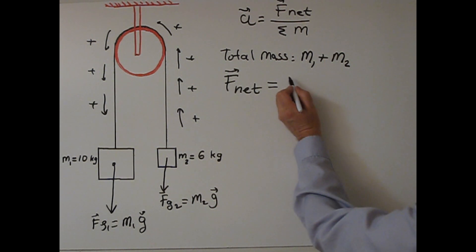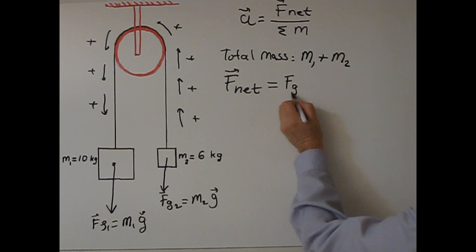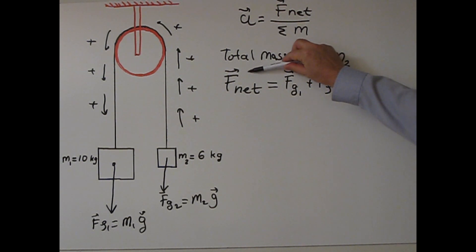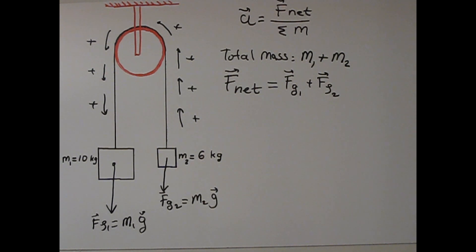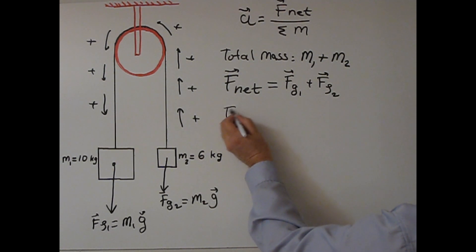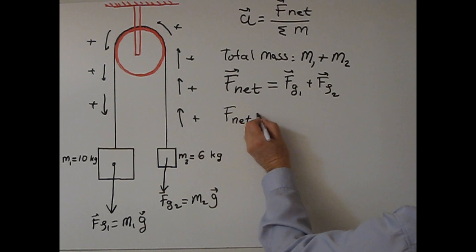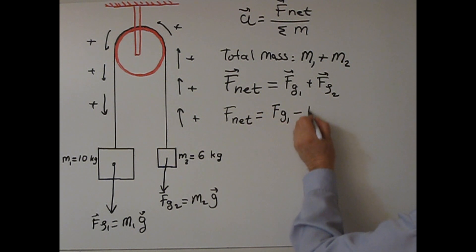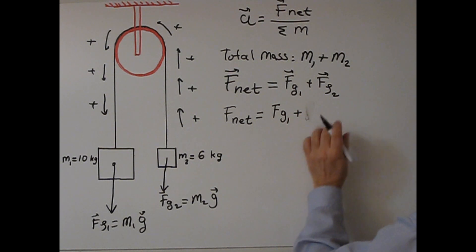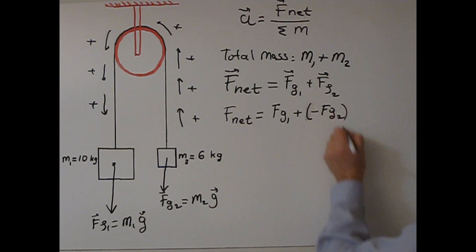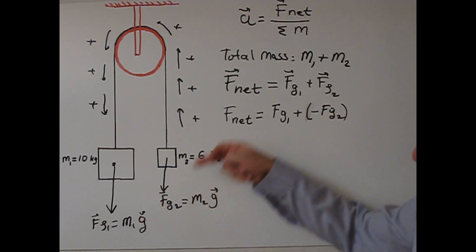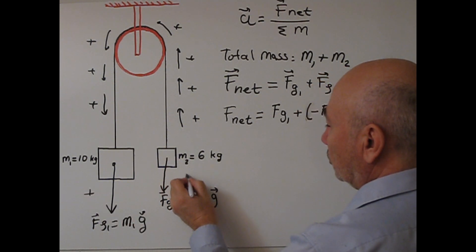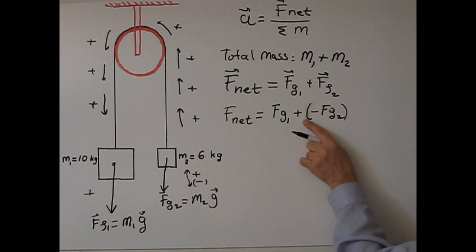FG2 equals M2 times G. When we write the net force, it is the vector sum FG1 plus FG2. In fact, mathematically we subtract. To find the magnitude of the net force, it is FG1 minus FG2. Although both point downward, the positive direction is defined for one side, so the other side is negative. So I put a negative sign here.